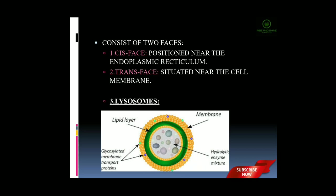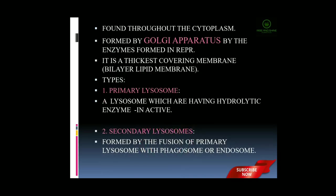Next part is lysosomes. Here I have given the structure of lysosomes with their parts. Lysosomes are found throughout the cytoplasm. They are formed by the Golgi apparatus using enzymes formed in the rough endoplasmic reticulum. Compared to all other parts present in the cytoplasm, the lysosome consists of the thickest covering membrane, formed by a bilayer lipid membrane. The lysosome may be characterized into two types. One is a primary lysosome, in which many small granules contain hydrolytic enzymes that remain in an inactive state.